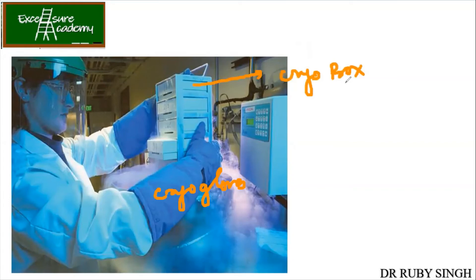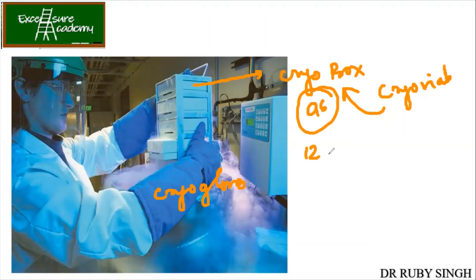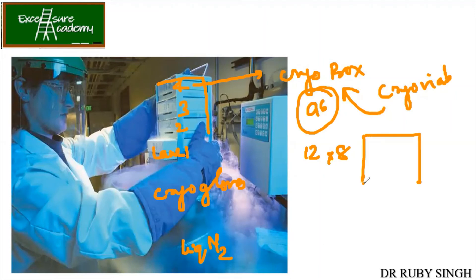Lab coat and protective gears are required. These are called cryo boxes — in these you have got the cryo vials. If you use normal vials, because of the sudden decrease in temperature the vials will burst out. That's why special cryo vials are needed, and those are kept in the cryo box — which can hold 96 vials, arranged 12 by 8. The liquid nitrogen container has lanes labeled 1, 2, 3, and 4. You need to remember in which lane, which box, and which number your sample is located. All this should be written in the logbook.